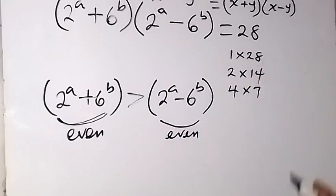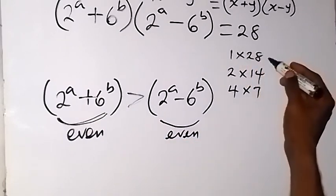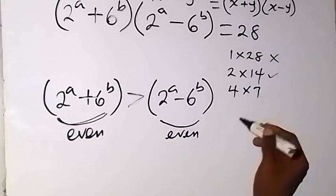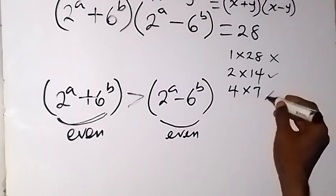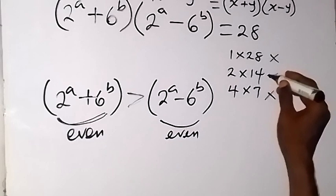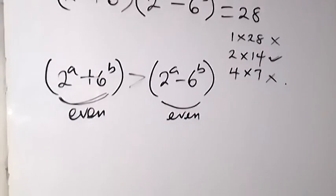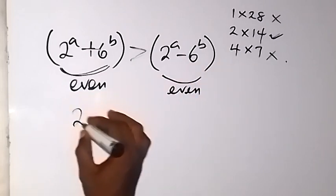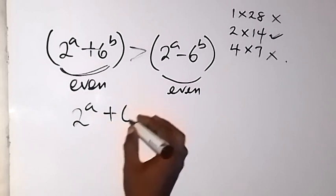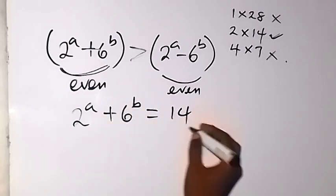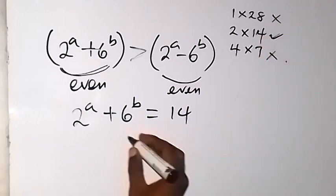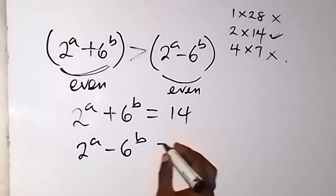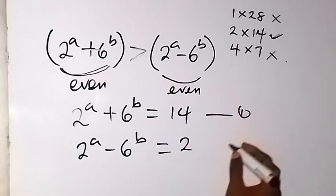Since the first bracket is greater than the second, 2 raised to power a plus 6 raised to power b equals 14, and 2 raised to power a minus 6 raised to power b equals 2. We have equation 1 and equation 2. We can eliminate 6 raised to power b by adding the two equations.